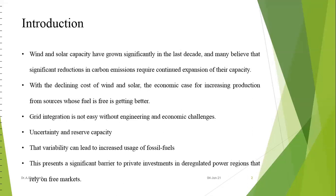The most frequently used and successful renewable energy resources are solar and wind energy, in India also. Wind and solar have increased significantly in the last 10 years, and they reduce the emission of carbon dioxide. A lot of CO2 and other greenhouse gases have been released from fossil fuel based power plants. So we are concentrating on renewable energy resources, and after integrating a huge amount of renewable energy, we have experienced minimization in emissions.